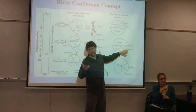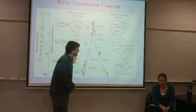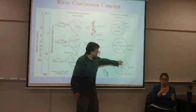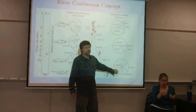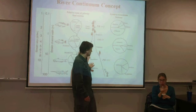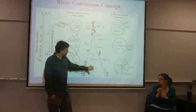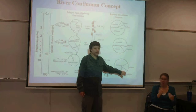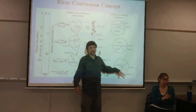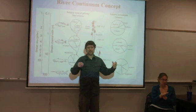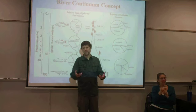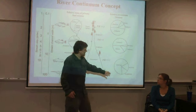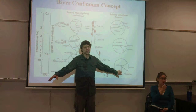The collectors become even more important as the system moves downstream, while the shredders become less important, and predators are still there. Moving down to the biggest rivers, it's almost all dominated by collectors with almost no shredders. Grazers are out if there's not much light getting to the bottom. You might have some zooplankton suddenly come up if water is slow enough with slow enough flushing rate, making it more like a lake with suspended materials that can stay in the system.